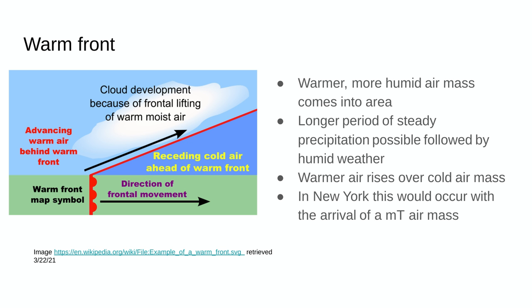A warm front is a little different. It's when two air masses are moving — in this example, moving to the right — but the warm air is going a little faster because it's less dense, so it slides up and over the cold air, causing precipitation. Instead of a brief, intense thunderstorm, this causes a day or two of rain. So if you have a steady rain for a couple of days, chances are it's a warm front. In New York State, this would be the arrival of a maritime tropical air mass with a source region of the Gulf of Mexico.